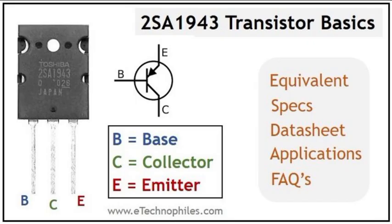Gain (HFE): 55 to 160. Frequency: 30 MHz. Package Type: TO-264. Junction Temperature: 150 degrees Celsius maximum.